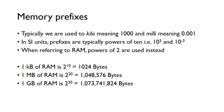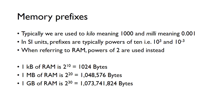I want to mention memory prefixes. We're used to using the word kilo, which means 1000, and milli is 0.001. In SI units, these prefixes are powers of 10 - kilo is 10 to the 3, milli is 10 to the minus 3. But when referring to RAM, we actually use powers of 2 instead. So 1 kilobyte of RAM is not 1000 bytes - it's 2 to the power 10 bytes, which comes out to 1024, so it's close to 1000 but not exactly.